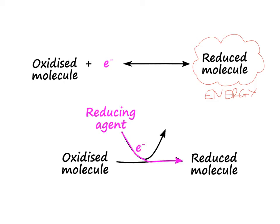However, in nature, we don't tend to have free electrons kicking about. What we tend to have instead are reducing agents. Reducing agents have extra electrons that they can give away. So when you combine an oxidised molecule with a reducing agent, the reducing agent passes its electrons to the molecule, and you end up with a reduced molecule.